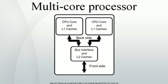A multicore processor is a single computing component with two or more independent actual central processing units, which are the units that read and execute program instructions. The instructions are ordinary CPU instructions such as ADD, MOVE data, and BRANCH, but the multiple cores can run multiple instructions at the same time, increasing overall speed for programs amenable to parallel computing.